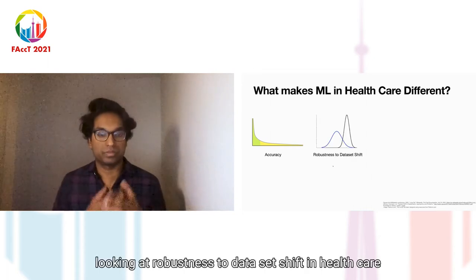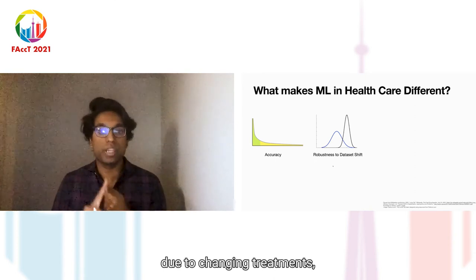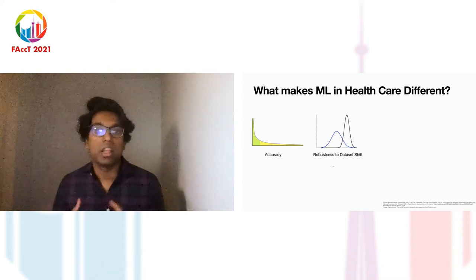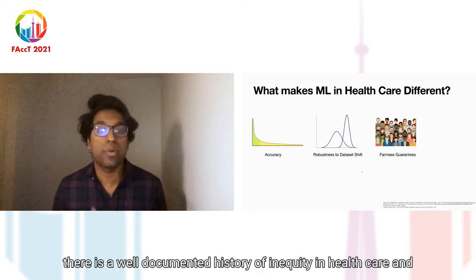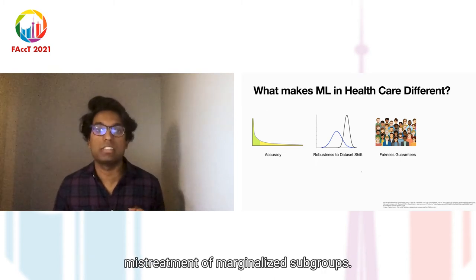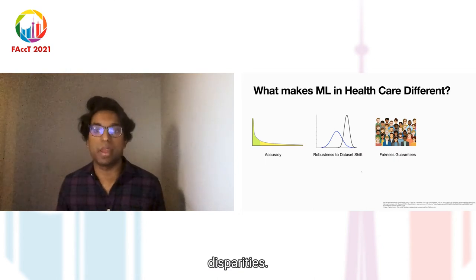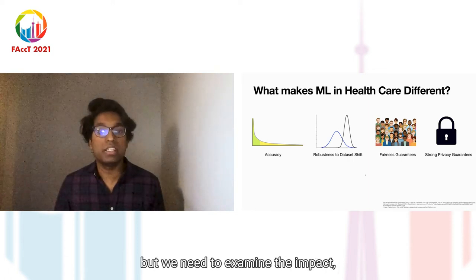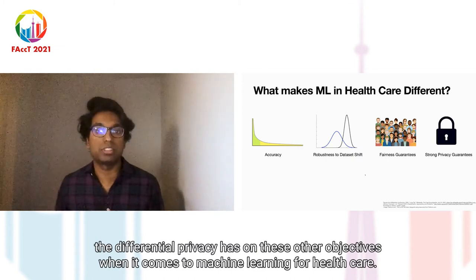Looking at robustness to dataset shift: in healthcare, due to changing treatments, changing conditions, and changing healthcare policies, the underlying data distribution is shifting over time, so we need models that are robust to this. Finally, there is a well-documented history of inequity in healthcare and mistreatment of marginalized subgroups, so we need to make sure the models are fair and don't exacerbate existing disparities. In summary, we need to examine the impact that differential privacy has on these other objectives when it comes to machine learning for healthcare.